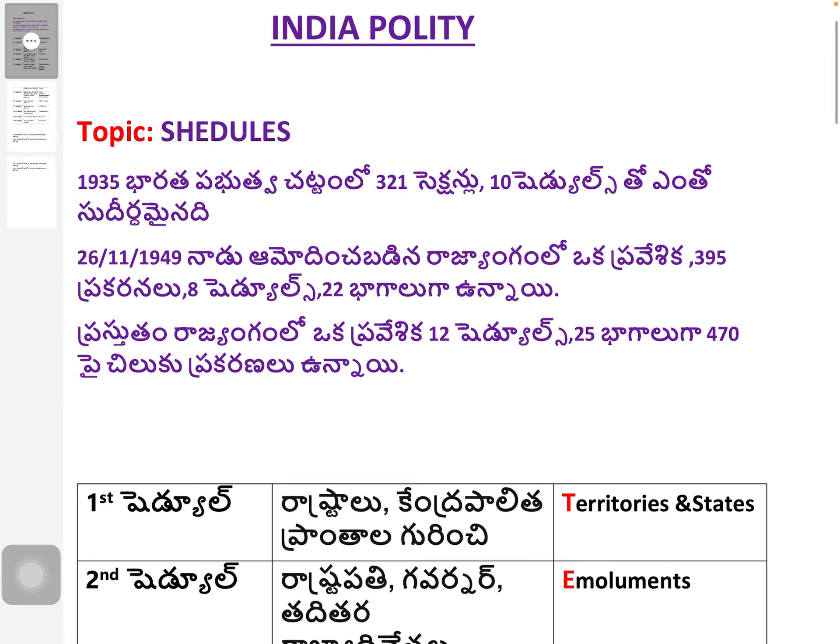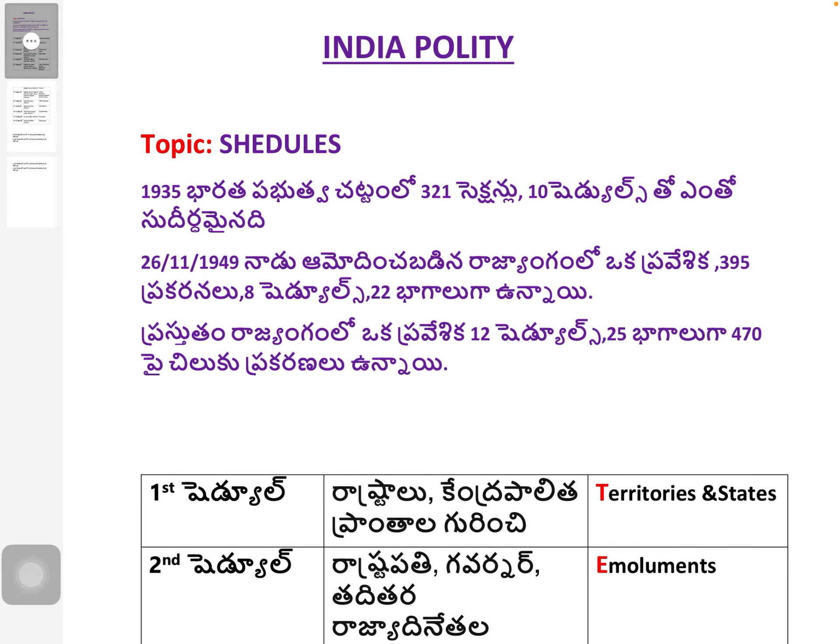Indian Constitution — Indian Quality: Schedules. We have an index type, like a book. In the first page there are indexes; in the last page we have mentioned schedules. We have 10 schedules to check out. Indian Government Act 1935 — many provisions came from 1935. We have 10 schedules and 3 sections.